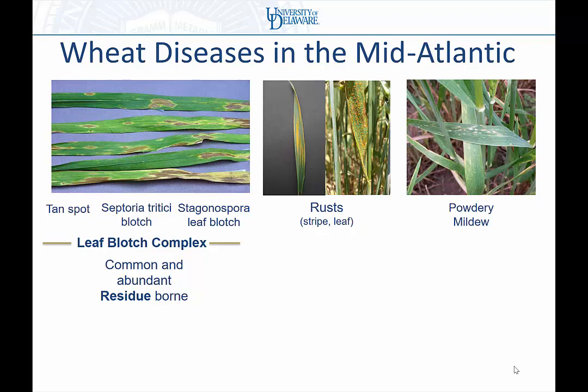Powdery mildew is another disease in the region. It used to be the number one disease, but leaf blotch has taken its spot. Powdery mildew is a cool season disease — we see it earlier in the season in the lower canopy. Once it gets too hot, it stops growing. It may not even reach the flag leaf, though it may with susceptible varieties. It doesn't require rainfall like the leaf blotch complex does — it just needs high relative humidity.